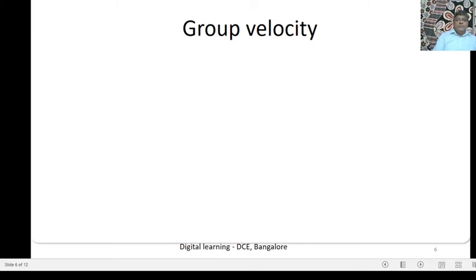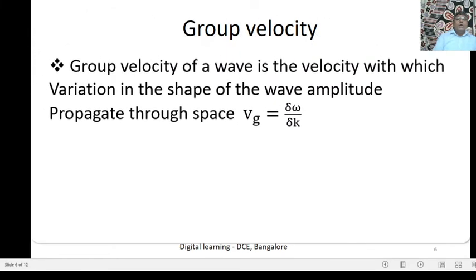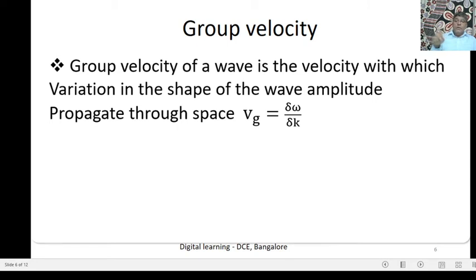Now, Group Velocity: The Group Velocity of a wave is the velocity with which variation in the shape of the wave amplitude propagates through space. Vg represents Group Velocity. Group Velocity is equal to Delta Omega by Delta K, so Vg equals ΔΩ/ΔK. Phase Velocity Vp is simply Omega by K. This is the mathematical representation of Group Velocity.